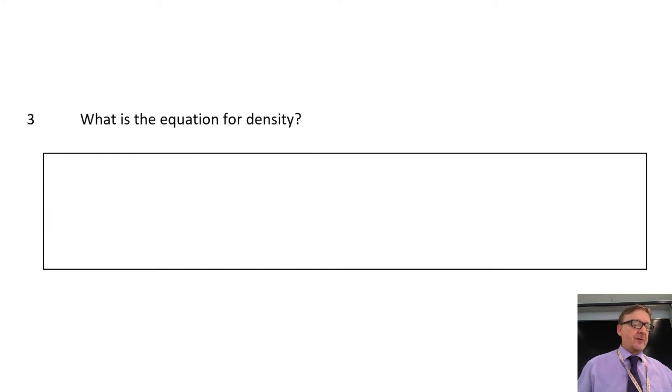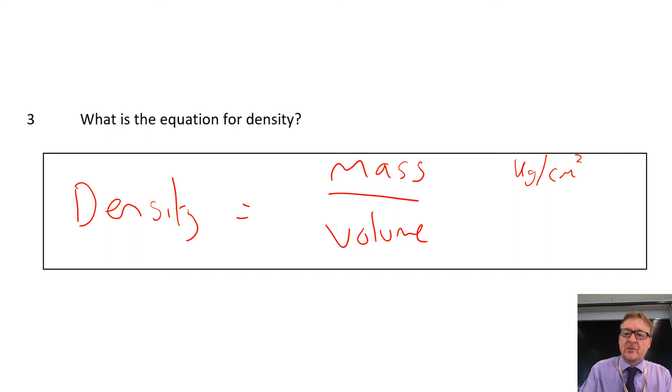What is the equation for density? Density equals mass divided by volume. Okay, now you could have, it's a bit weird this one, density, you could have a number of different units for it. So if mass is kilograms and volume is centimeter cubed, it could be kilograms per centimeter cubed. Or it could be kilograms per meter cubed. Or it could be grams per centimeter cubed. Or it could be grams per meter cubed.